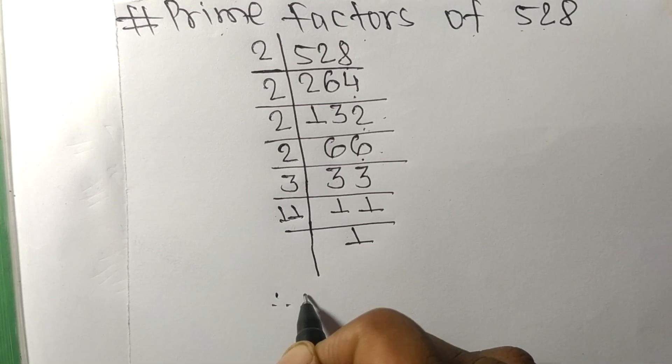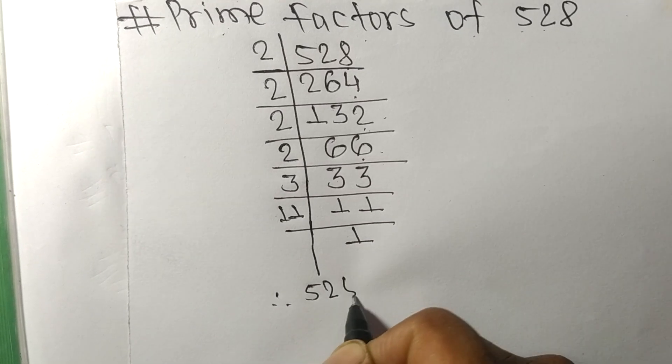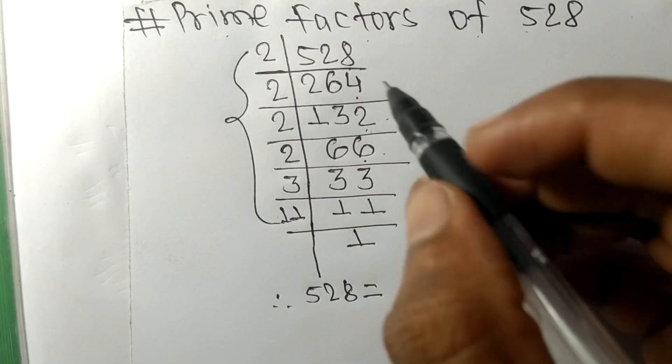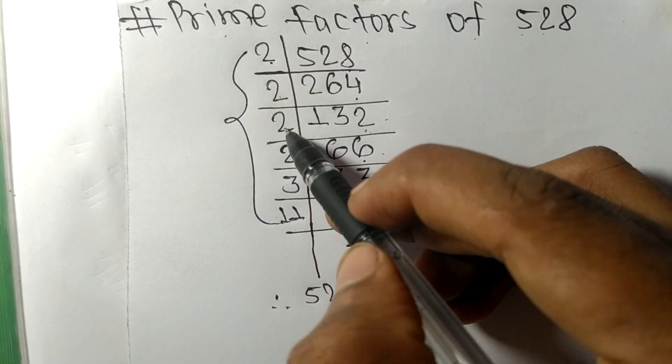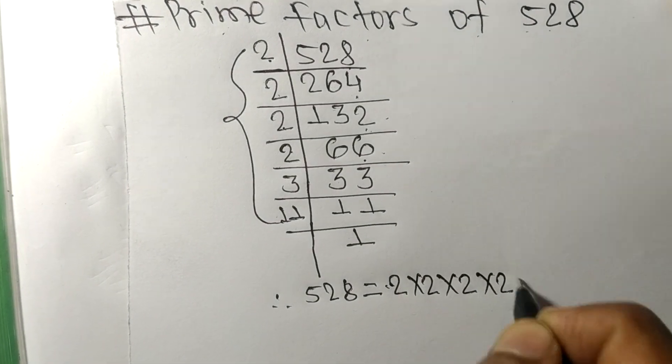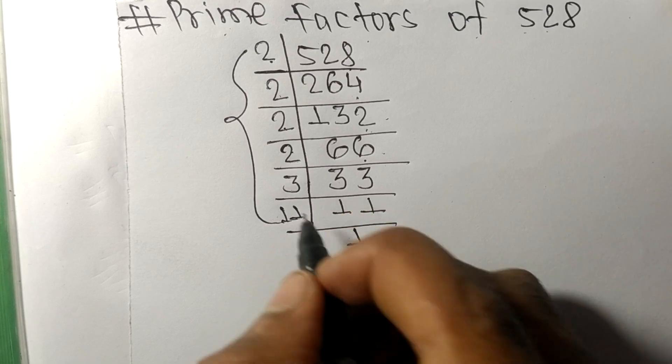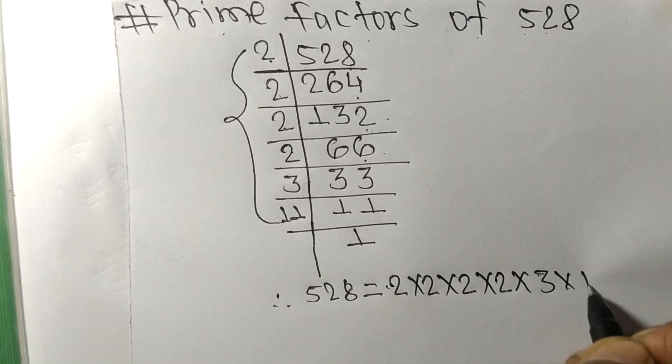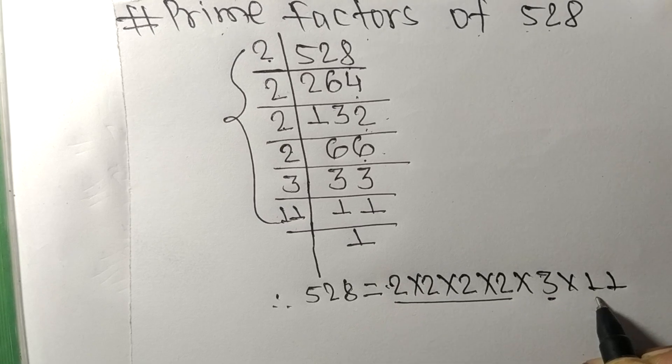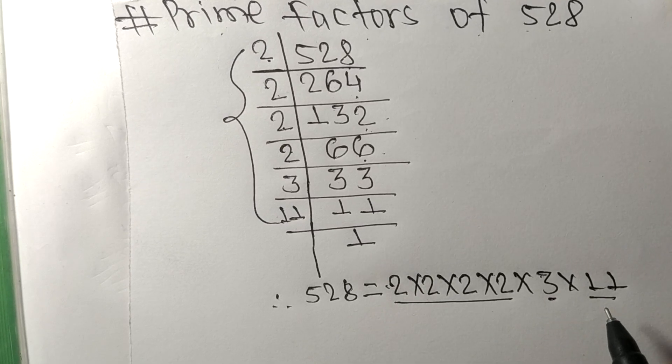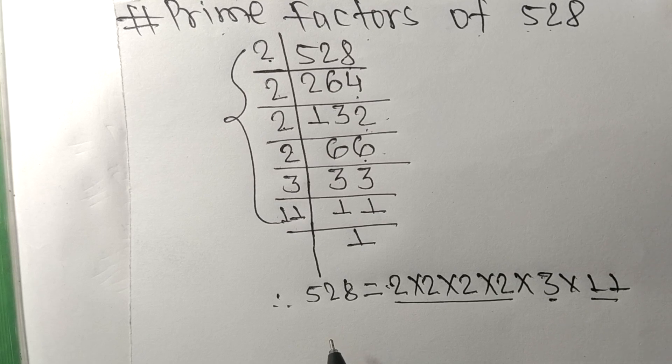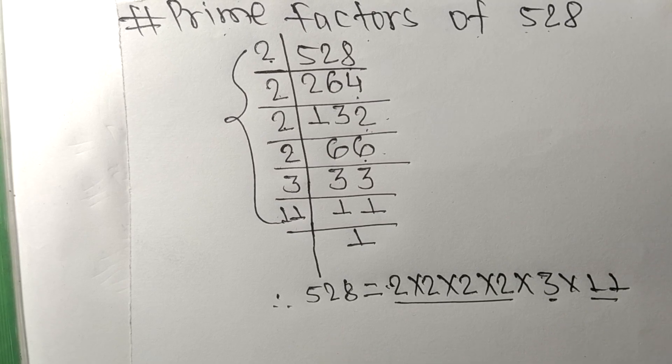Therefore, 528 is equal to 2 to the power of 4 (we have four 2s from this side) times 3 times 11. So 2, 3, and 11 are the prime factors of 528. So this much for today, and thanks for watching.